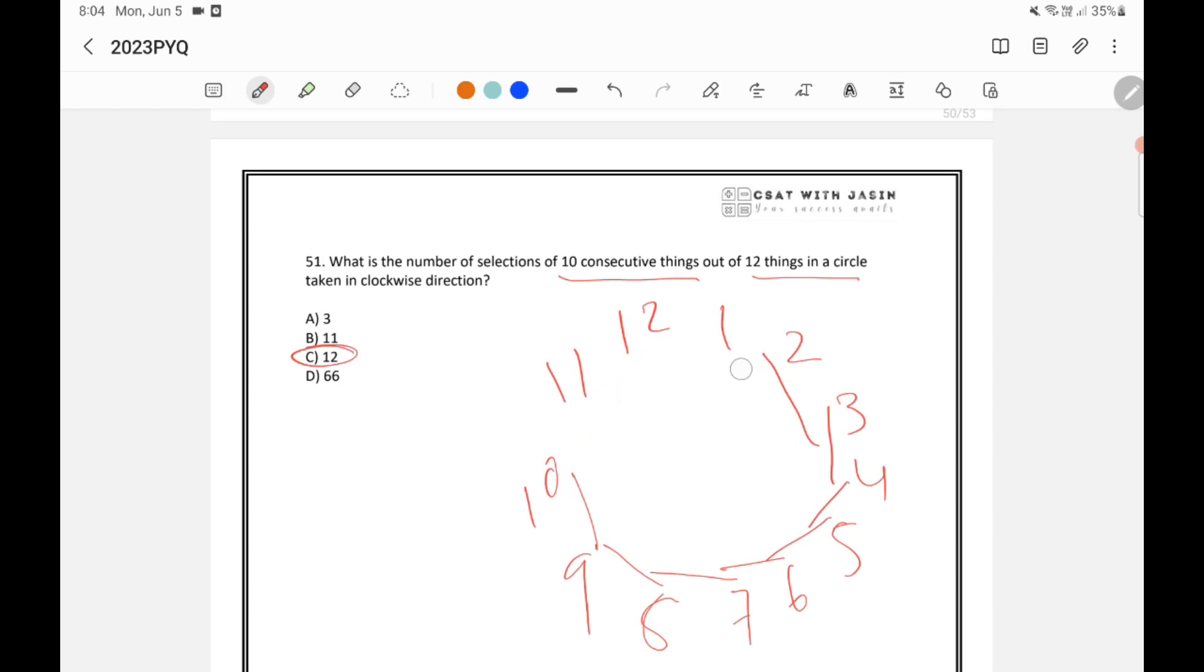Again, I will tell you one trick for the trick here. So if you have n number of things, for example, if you have n number of things in a circle, then the number of selections of 10, 11, 12, whatever, whatever number of consecutive things, it will be n itself. So here there are 12 things in a circle. So answer will come 12.